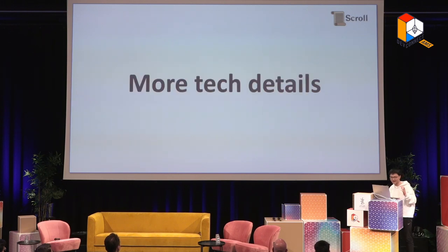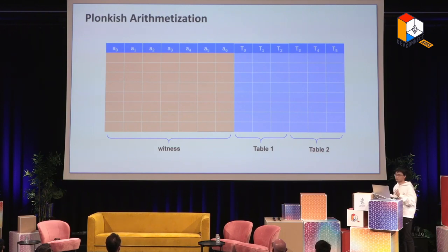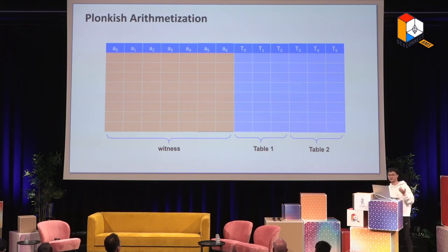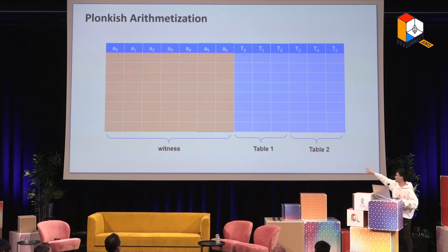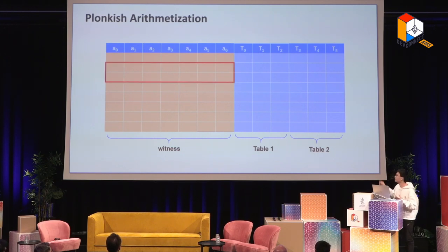Now I'll move into some even more technical detail for how to build these constraints. What we are using is Plonkish optimization. In Plonkish optimization, you have a witness table — you need to fill up some values in this table. There is witness and there are table columns. What you can define in Plonkish optimization is a certain rectangular region and define relationships over the cells within that region. For example, you can define that the first cell plus the second cell equals the third cell.